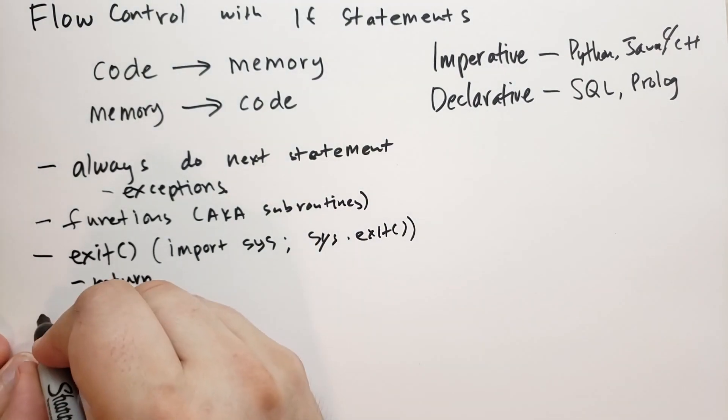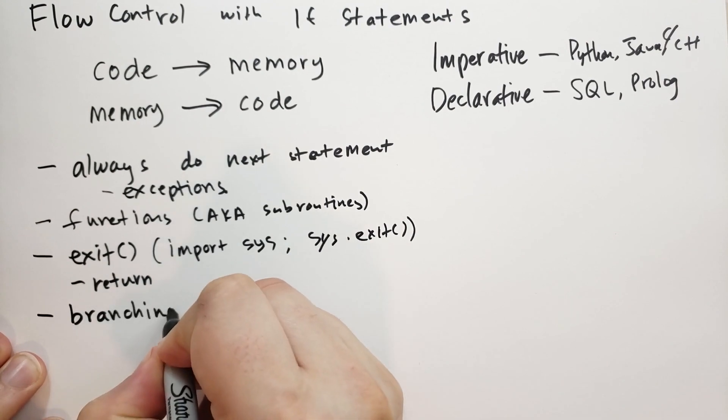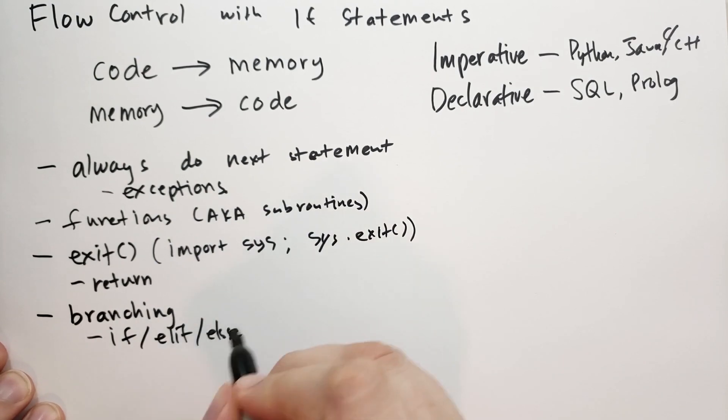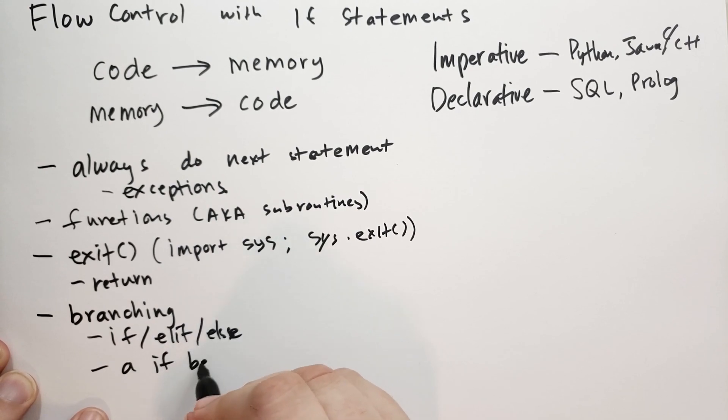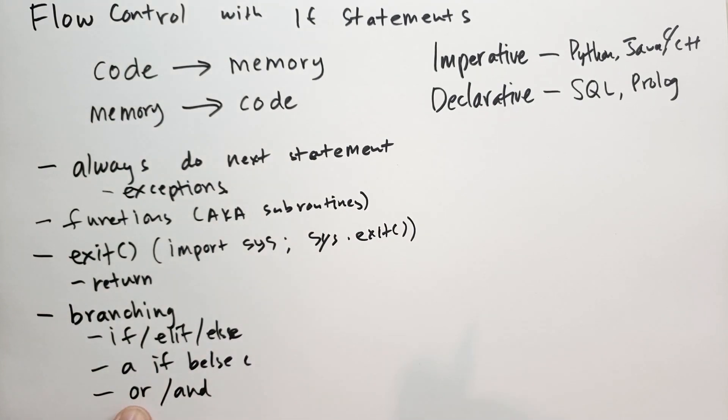Another way to control flow is we can do branching. In Python, that means the if statement, which includes elif and else. It includes the conditional: a if b else c. It also includes or and and operators. We're going to talk about how the or and and operators are doing branching through something called short-circuiting.